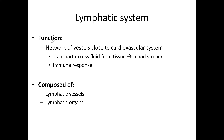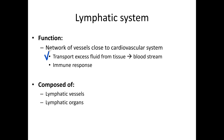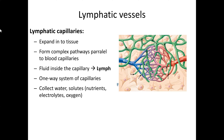The lymphatic system is a network of vessels close to the cardiovascular system, along with lymphatic organs. It is composed of lymphatic vessels and lymphatic organs. Its functions are: transport of excess fluid from tissue to the bloodstream, and immune response. The smallest lymphatic vessels are lymphatic capillaries, which expand into tissues and form complex pathways parallel to blood capillaries.